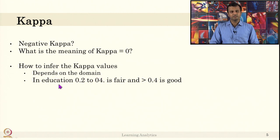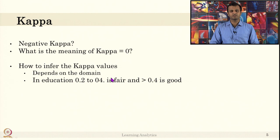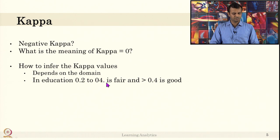For example, in the education domain, 0.2 to 0.4 is considered fair, and above 0.4 is considered good. If you have multi-class problems — say classifying students into pass, 50–60 marks, 60–70 marks — then a kappa score of 0.4 is also considered to be good.